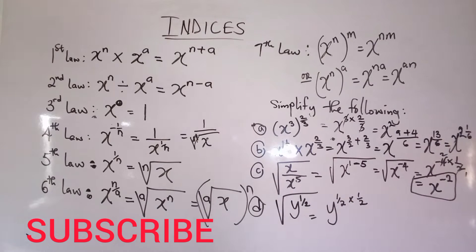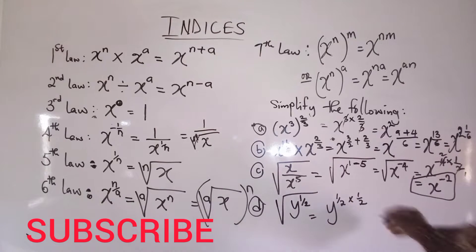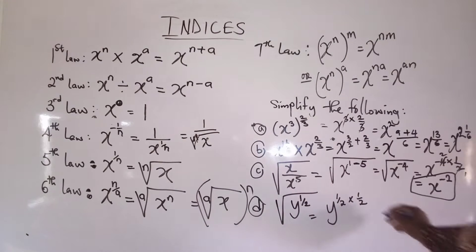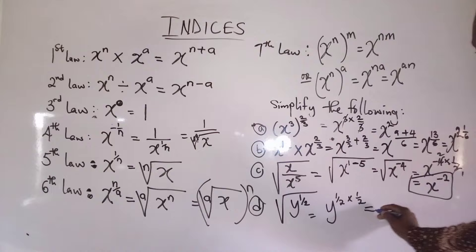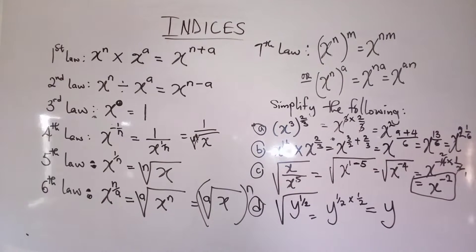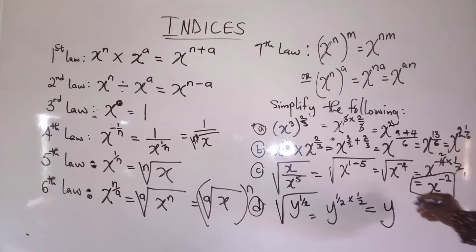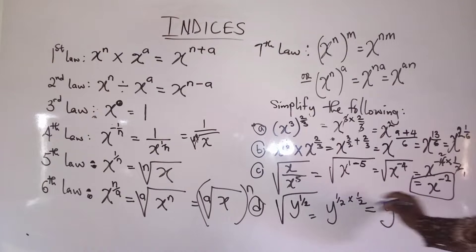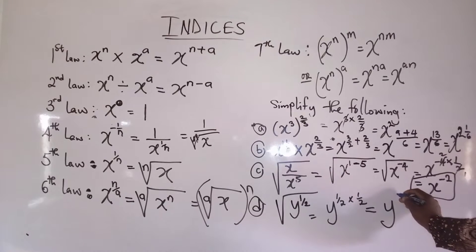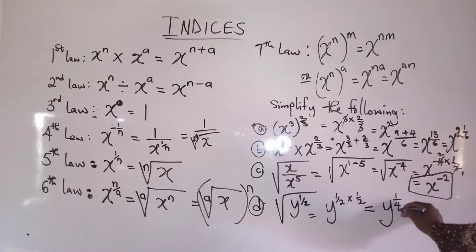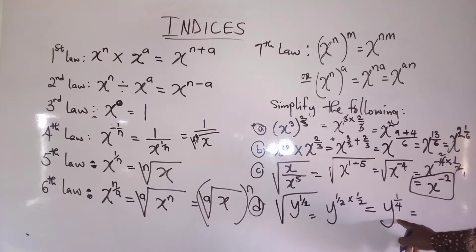The square root is half, so we now use the seventh rule, which will give us y. y equals one times one, two times two is four, so I can decide to leave it this way.